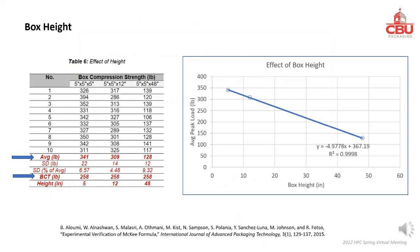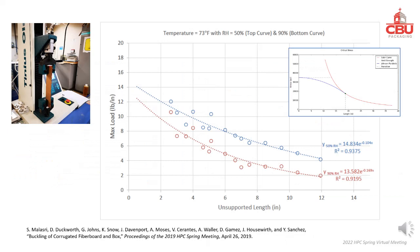This slide compares compression strength of boxes with the same footprint but different heights at 5, 12, and 48 inches. As box height increases, the strength decreases. It should be noted that box height is not part of the McKee formula; thus BCT or box strength is the same for all three heights at 258 pounds. This is consistent with the compression test of corrugated strips at different unsupported lengths — longer unsupported length, similar to box height, lowers compression strength. This is well known in buckling of long slender columns in engineering mechanics.